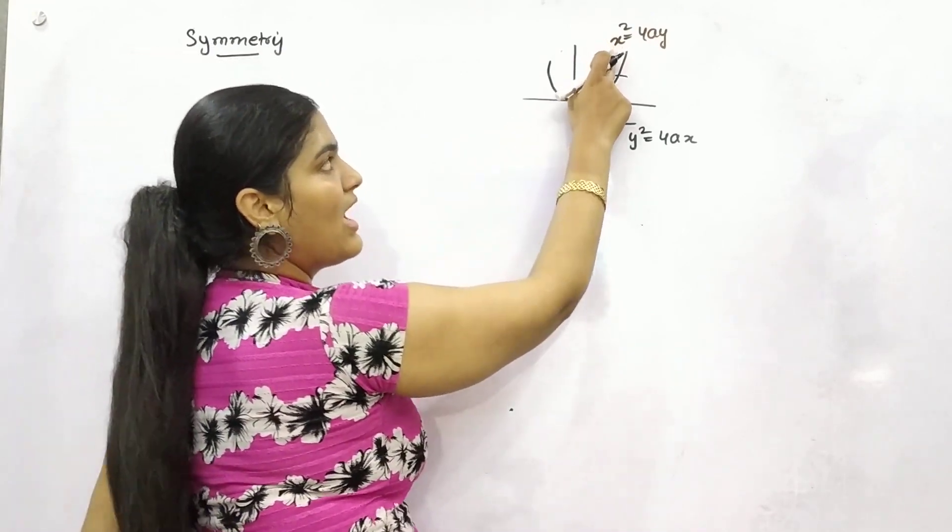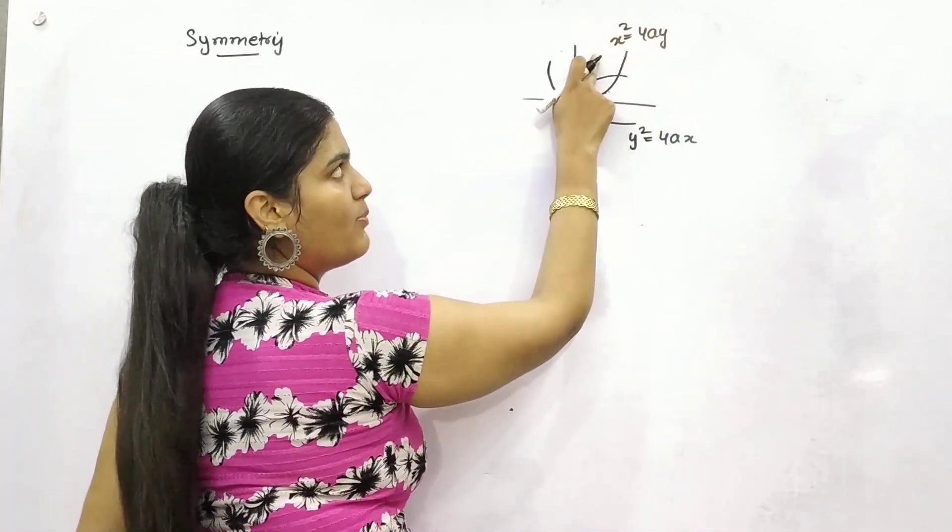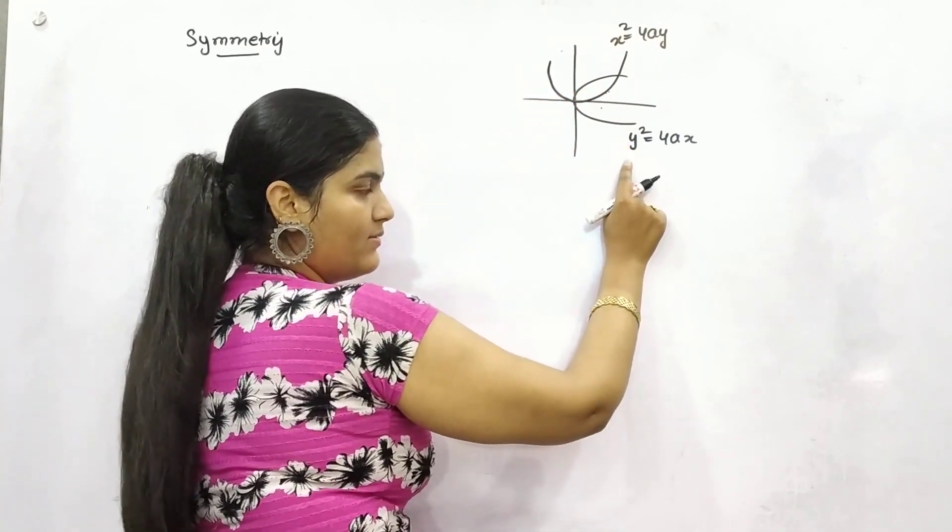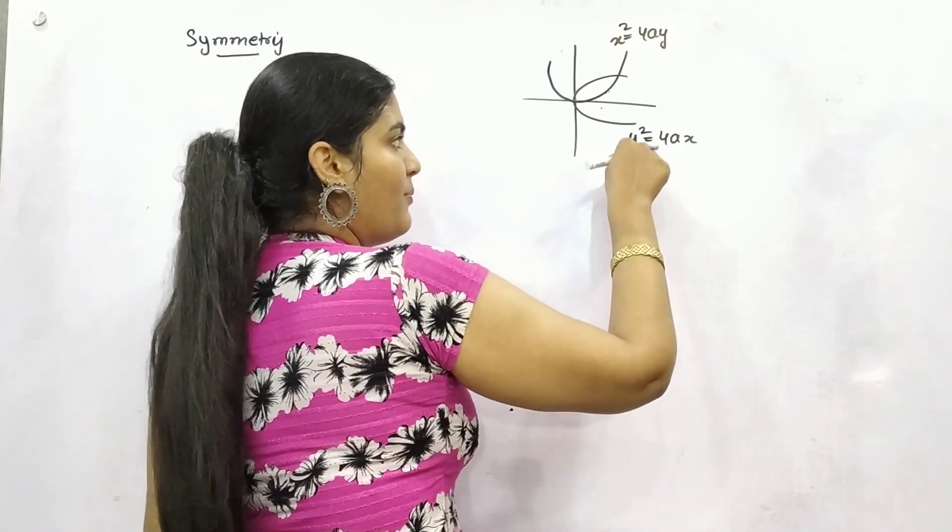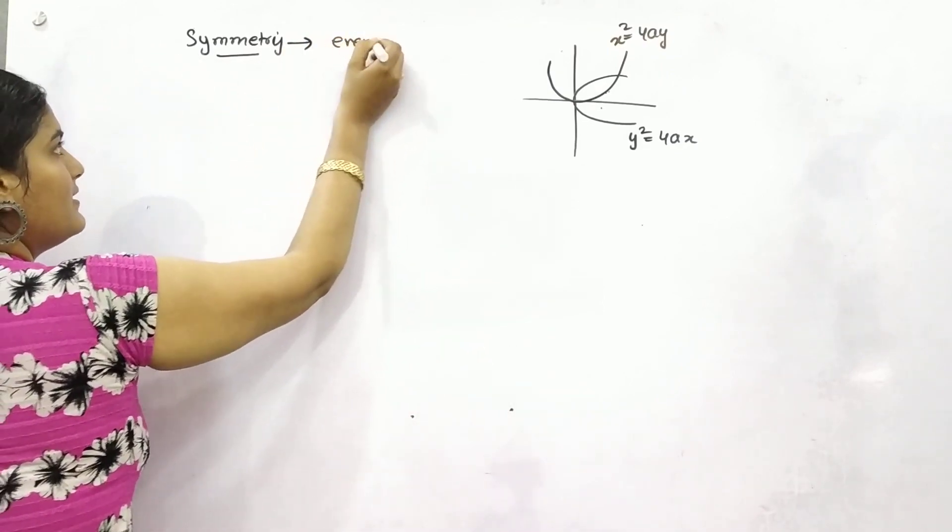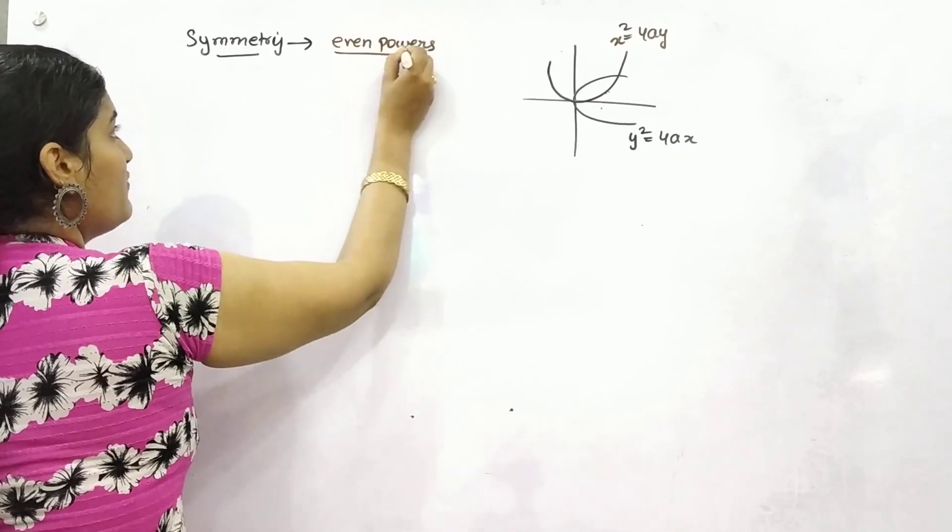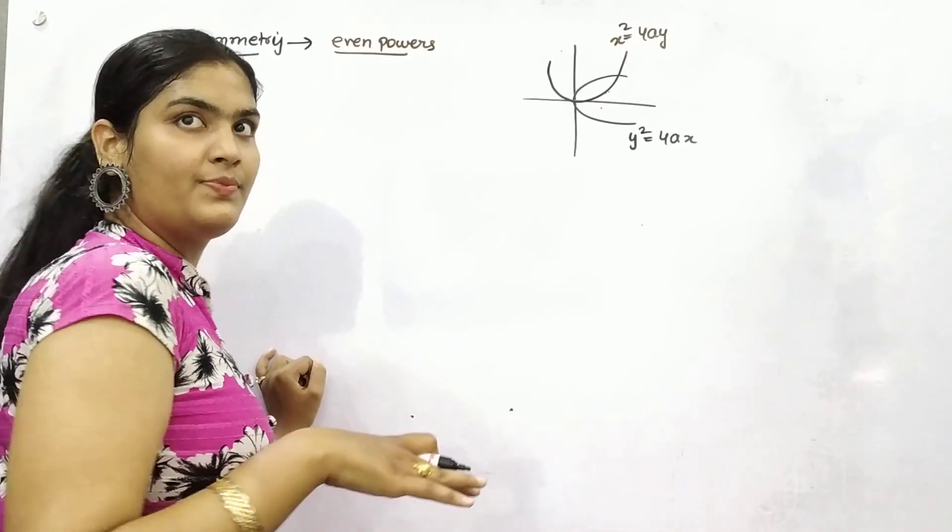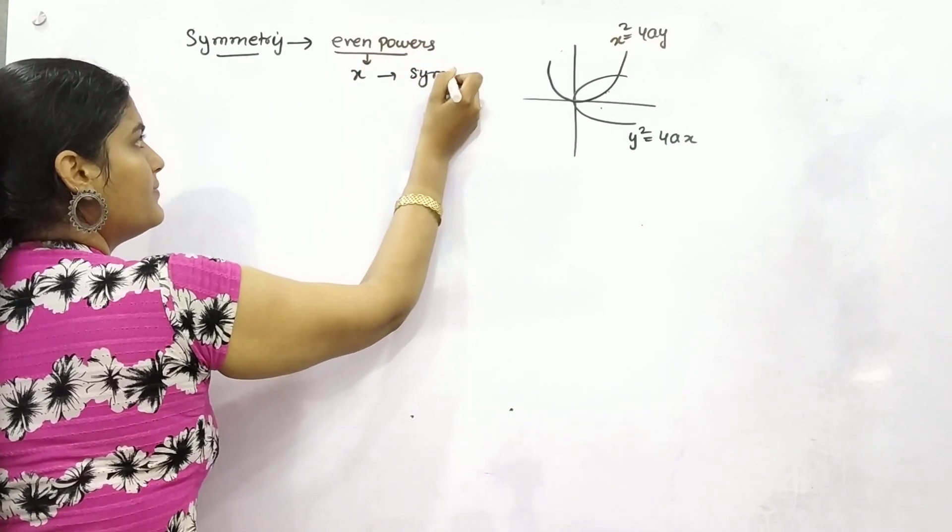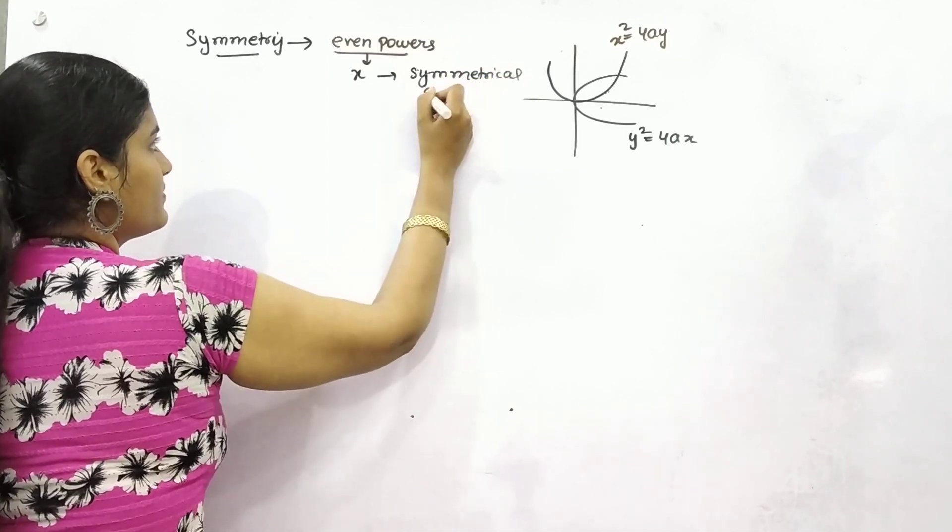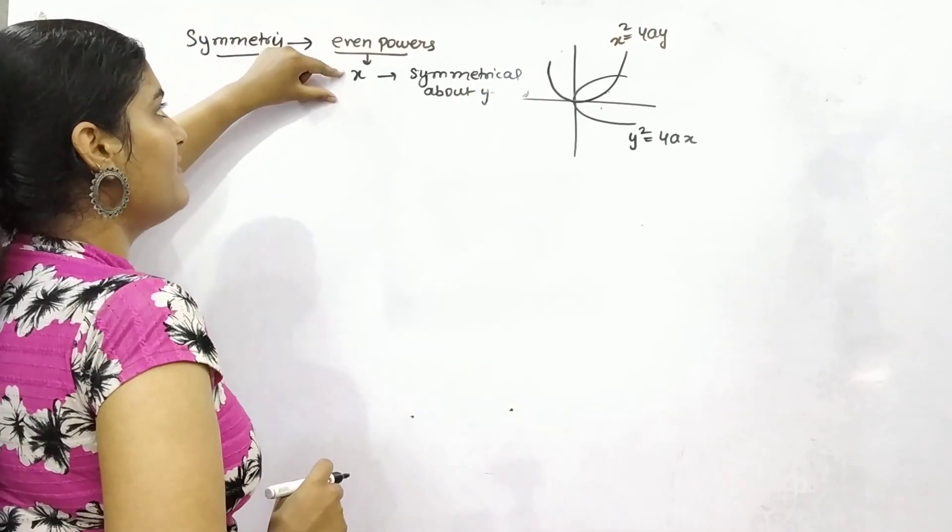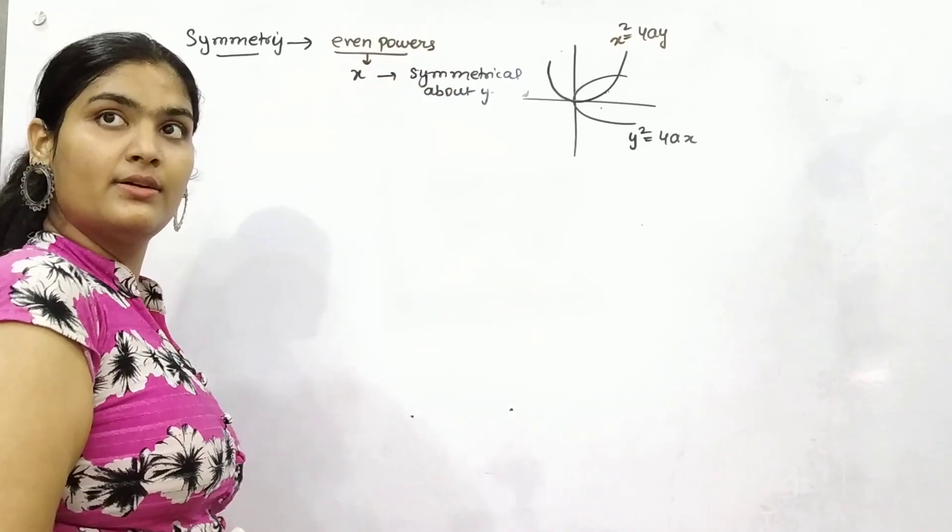Here you have symmetrical about y-axis with even power of x. Here even power of y is symmetrical about x-axis. So first you need to check which variable is having even powers, and it will be symmetrical about the other one. If x has even powers, it will be symmetrical about y-axis, and vice versa.